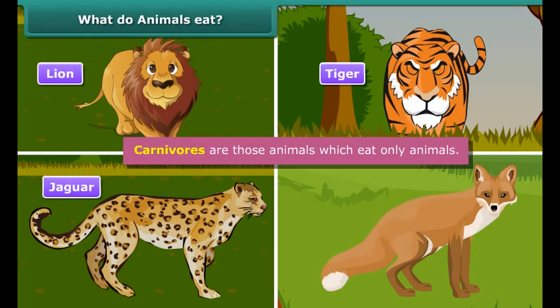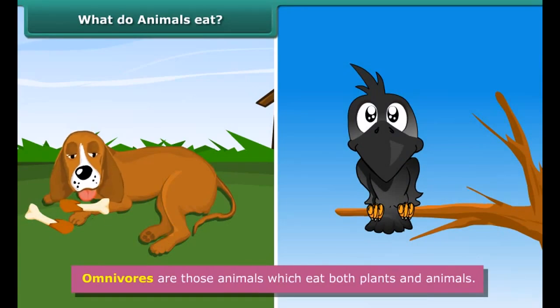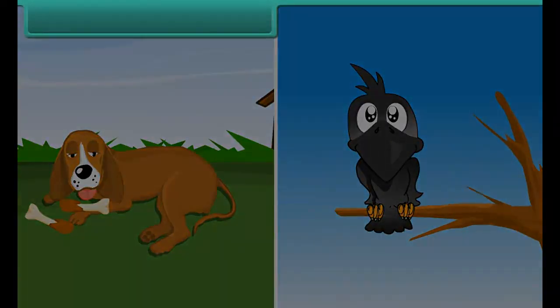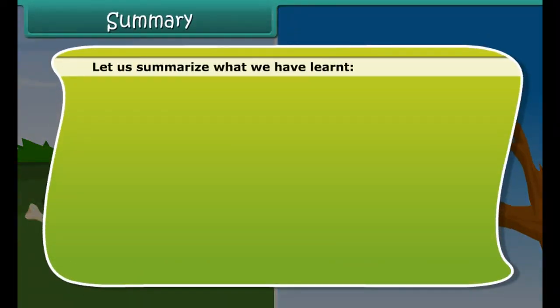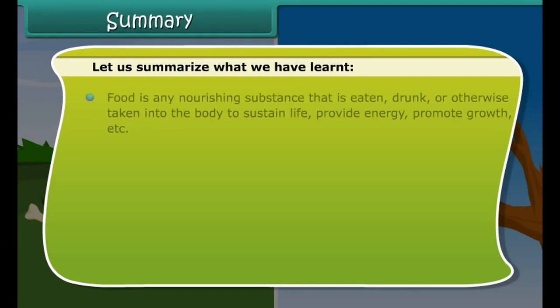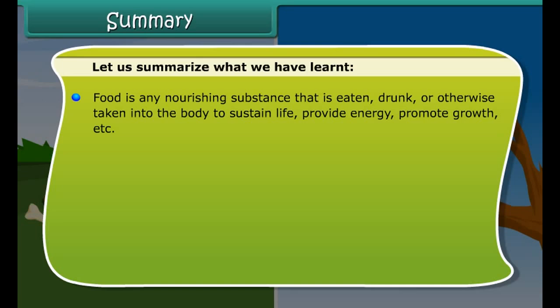Let us summarize what we have learned. Food is any nourishing substance that is eaten, drunk, or otherwise taken into the body to sustain life, provide energy, promote growth, etc. Plant is the main source of food. We also get food from animals. Herbivores eat only plants, carnivores eat only animals, while omnivores eat both plants and animals.